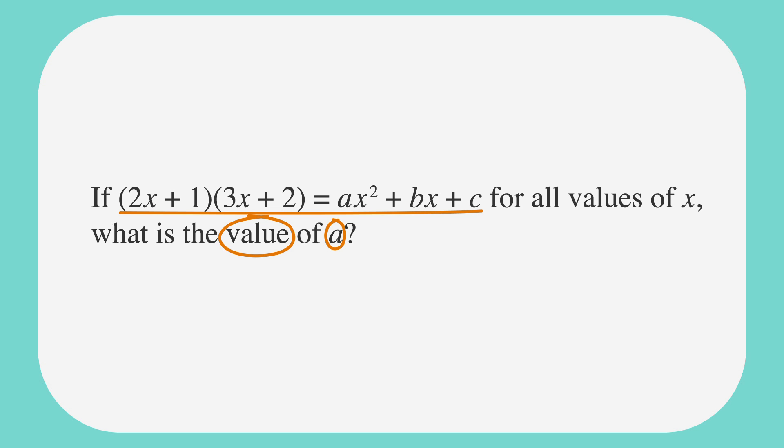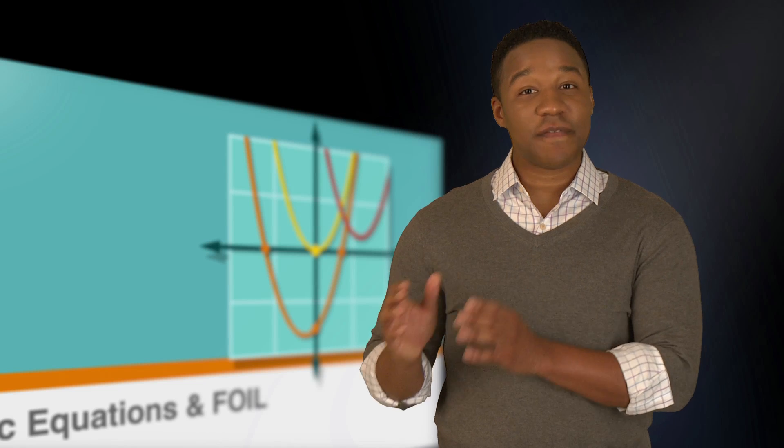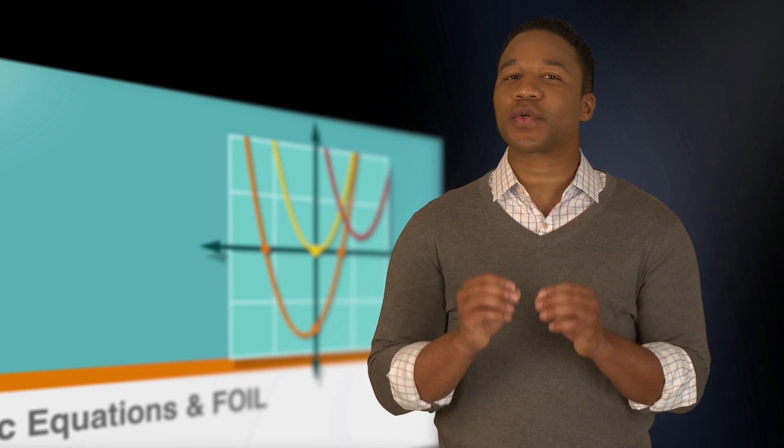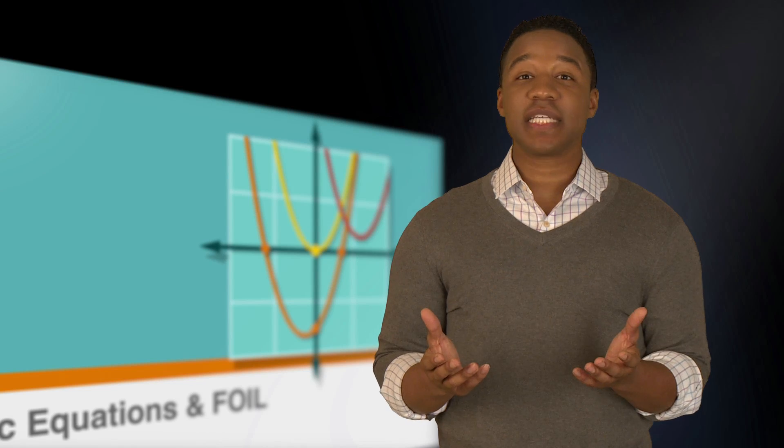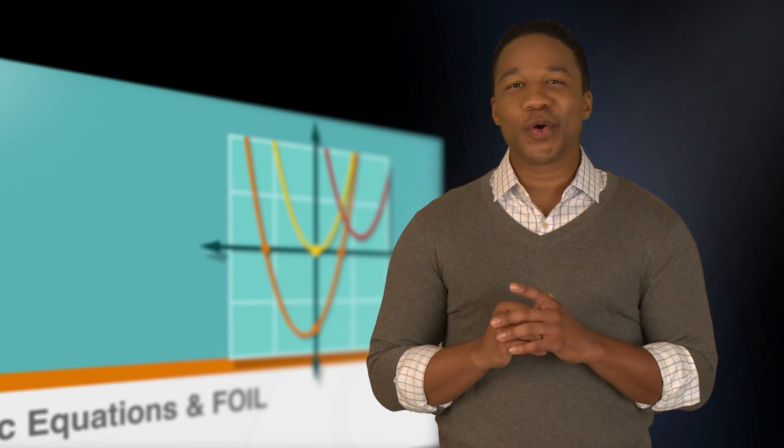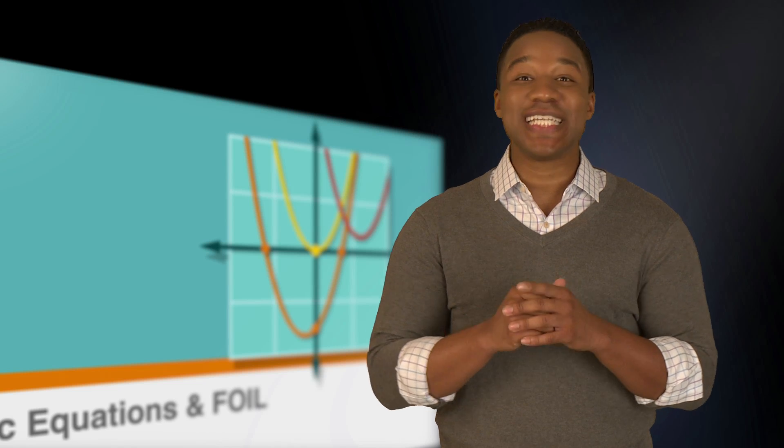We'll use this newly refreshed skill to help us solve the following SAT problem. As we read it, we'll underline the facts and circle the key words of the question. If the quantity 2x plus 1 times the quantity 3x plus 2 equals ax² plus bx plus c for all values of x, what is the value of a? Notice that in this equation, the right-hand side is in standard format, but the left-hand side is not. Also, notice that since this question doesn't have any answer choices, this is a grid-in question.